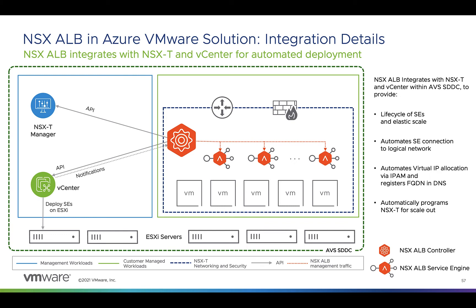From the admin perspective, they define a virtual service to front-end the application, and the controller takes it from there. It will determine if there's a service engine with sufficient resources available, and if not, it will create one by initiating a VM creation operation using an OVF in the content library. It'll connect the service engine to the proper network if needed, configure VIP static routes on NSX distributed routing, and configure NSX groups and network security groups with service engines as members and TCP/UDP services used in the load balancing pool.